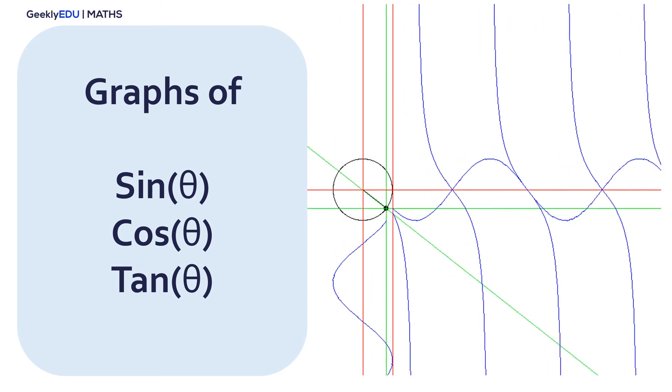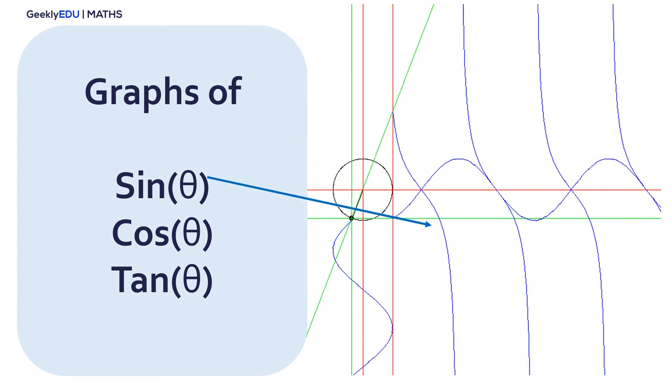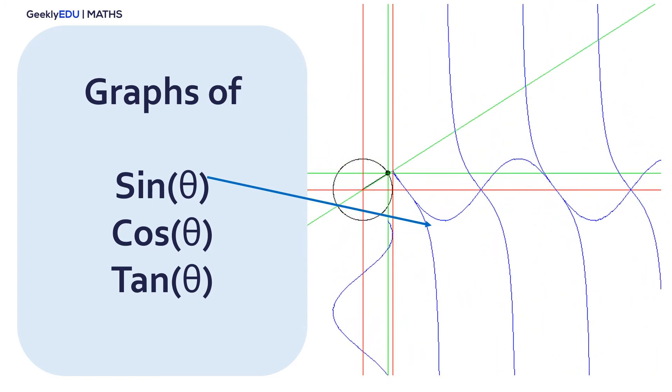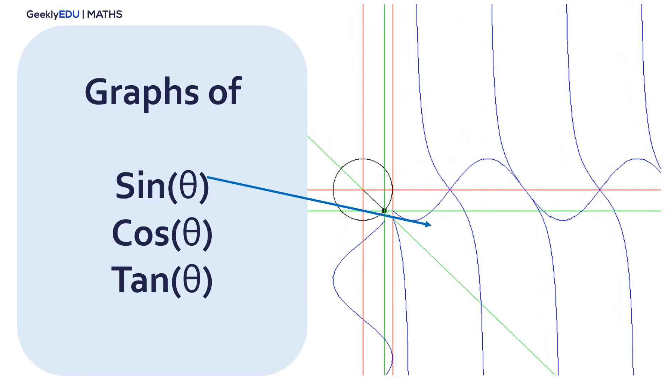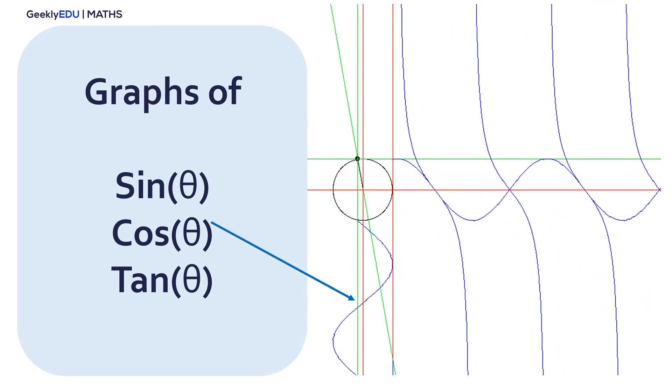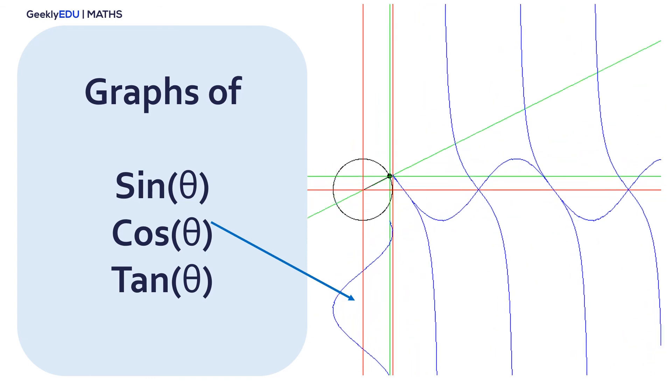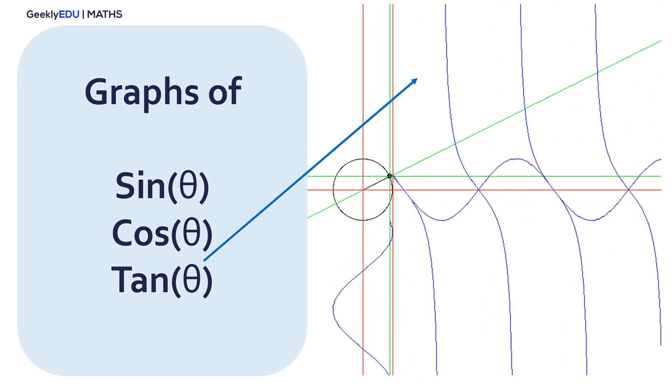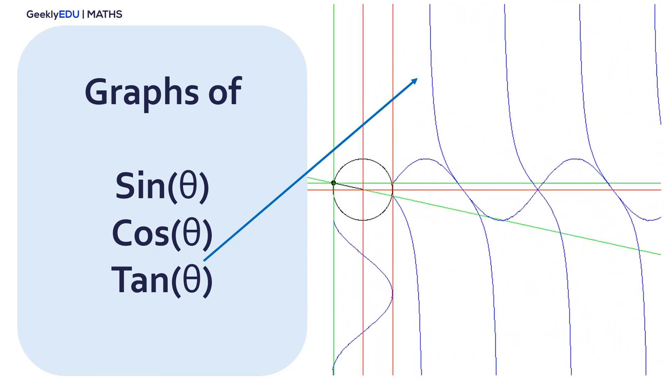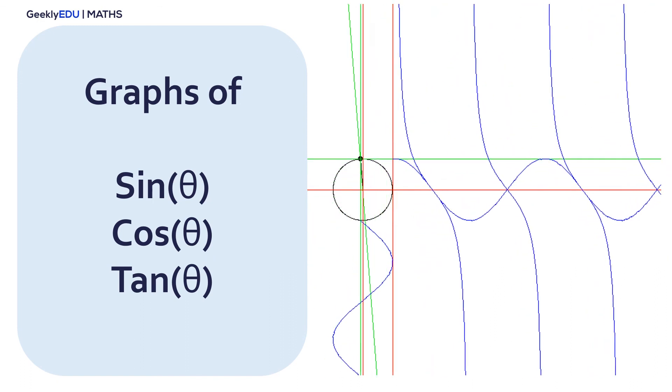Here you can see the graphs of sine, cosine and tangent. Sine is this one, is in the horizontal plane, and the difference between sine and cosine is that when sine is equal to 0, cosine is equal to 1. And tangent is a non-continuous function. That's why we have several lines instead of only one continuous line.